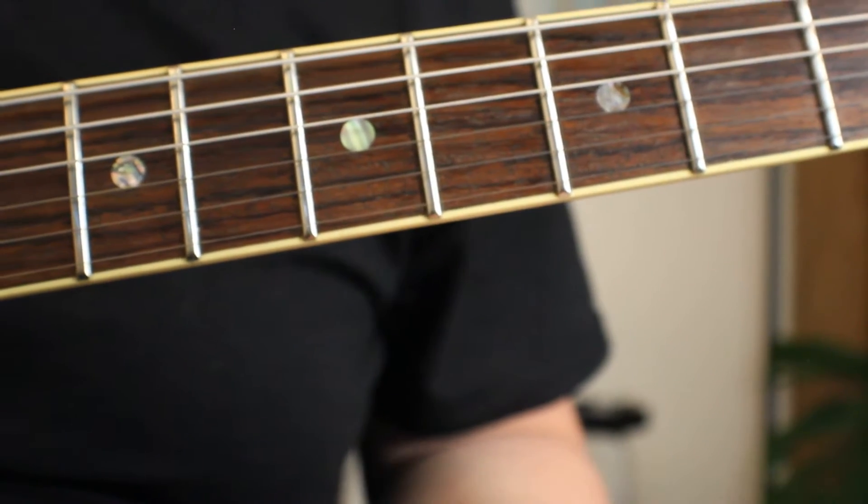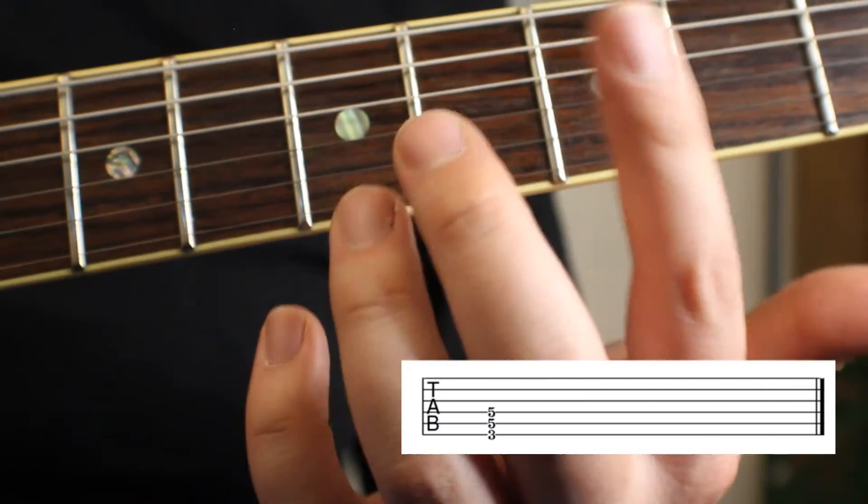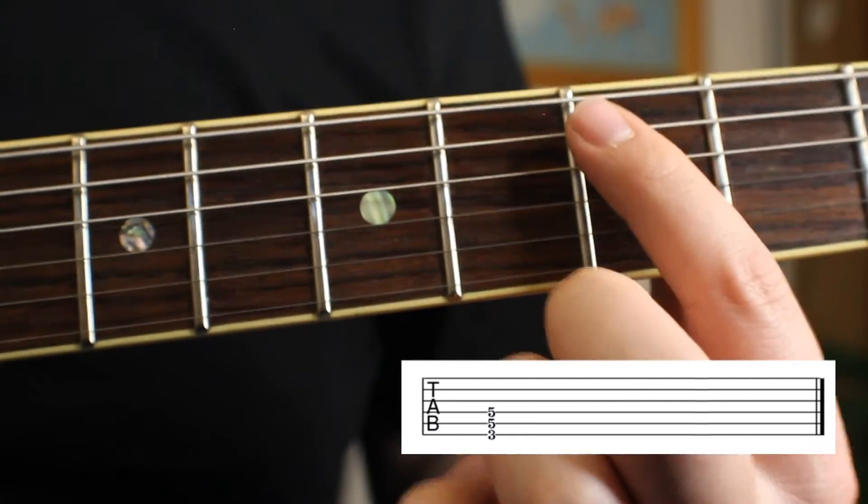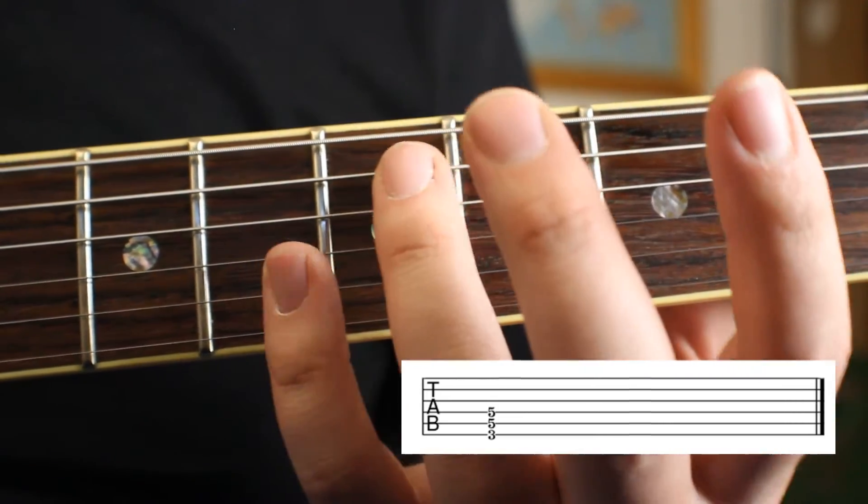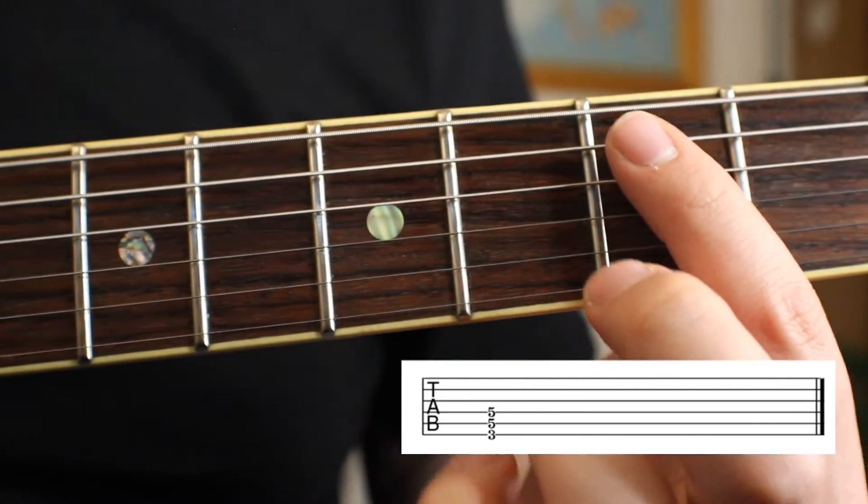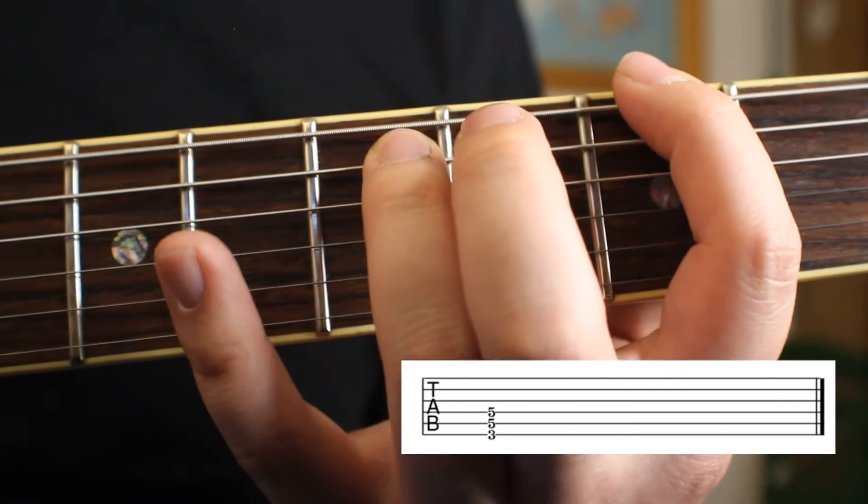The first one I'm going to call the standard position for a power chord. Take your pointer finger and put it on your root note, which in this case is G, and then follow that up with your ring finger on the fifth, which is up a string and over two frets.